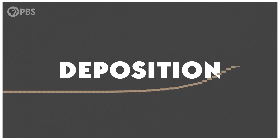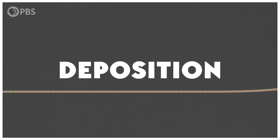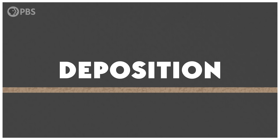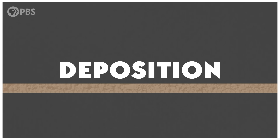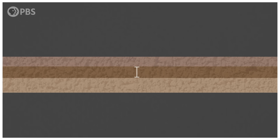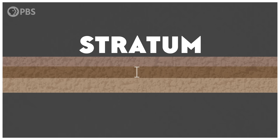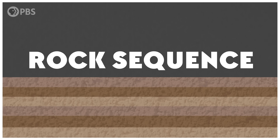Sedimentary rock layers are formed by a process called deposition. When eroded geological materials like sand are laid down by wind, water, or even ice, they accumulate to build up layers of sediment that later turn into rock. When you've got a layer of rock that's distinct from everything above and below it, that's called a stratum. Pile up a bunch of strata on top of each other, with each level representing one span of time, and together they'll create a rock sequence.